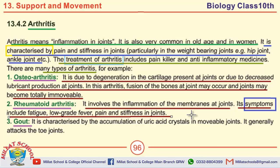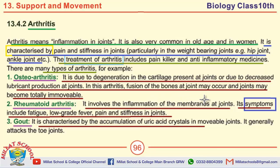The last question on this page: define gout or what is gout disease? Gout is characterized by the accumulation of uric acid crystals in movable joints. It generally attacks the toe joints.